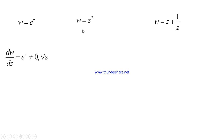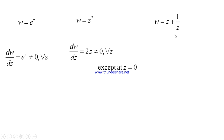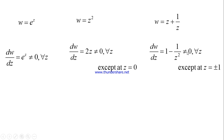For w = z², the derivative is 2z, which is not equal to zero for all z except z = 0, so z² is conformal everywhere except at z = 0. For w = z + 1/z, the derivative is 1 − 1/z², which is not equal to zero except at z = ±1. So this transformation is conformal everywhere except at z = +1, z = −1, and z = 0, where the function ceases to be analytic.